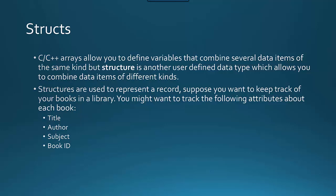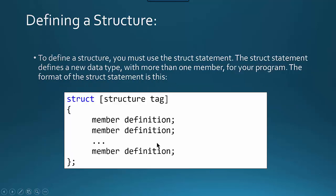The way you can think of a struct is like a record in a database. So if you were to think about what we would need to store for a book in a library, we would want to store information like the title, the author, the subject, and the book ID. We could create several variables to do this, but wouldn't it be nice if we could roll this all up into one variable that just held all this information? Well, a struct allows us to do that.